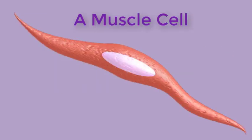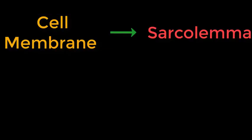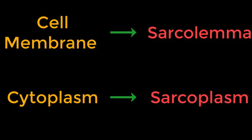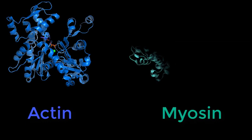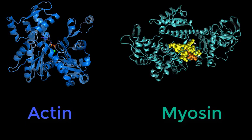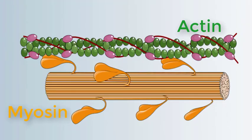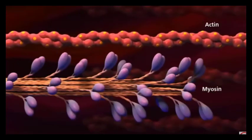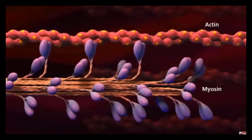The anatomy of muscle cells differs from that of other body cells, and biologists have applied specific terminology to different parts of these cells. The cell membrane is known as the sarcolemma and the cytoplasm is called the sarcoplasm. These cells comprise many proteins, the two most common being actin and myosin, which form bands in the muscle.